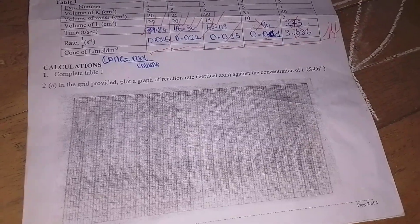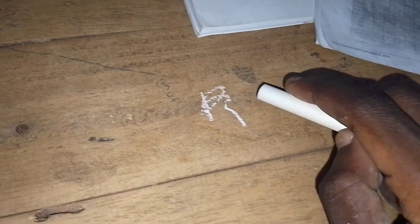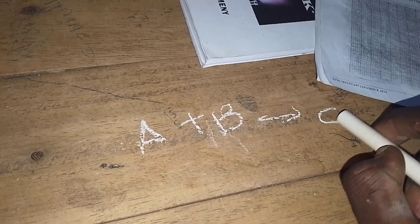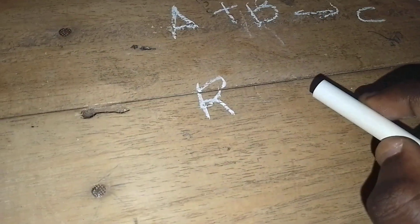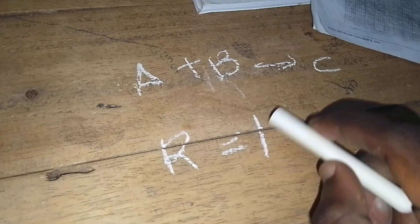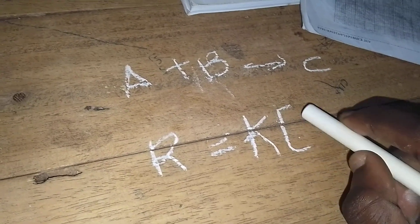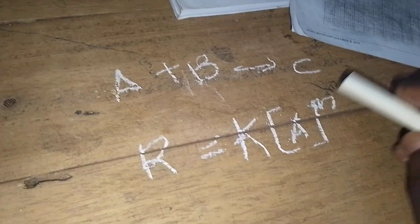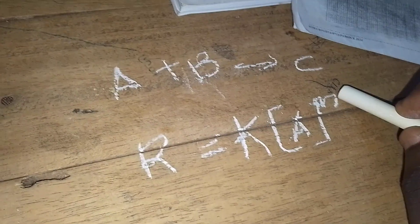If plotting a graph of reaction rate against concentration, we know that for a general reaction A + B → C, the rate equals the rate constant k times [A]^m times [B]^n, where m and n are the partial orders with respect to each reactant.